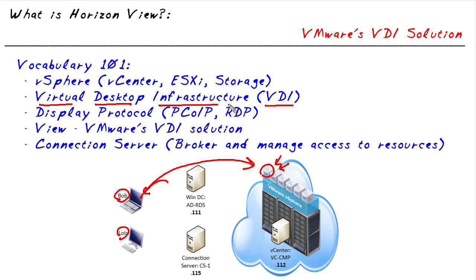Virtual desktop infrastructure is all about user desktops being run as virtual machines inside the data center — in a VMware context, in a vSphere environment. And there are other solutions that allow that as well. For example, Citrix and Microsoft also have VDI solutions where we're hosting the desktop of the user inside the data center as a virtual machine.